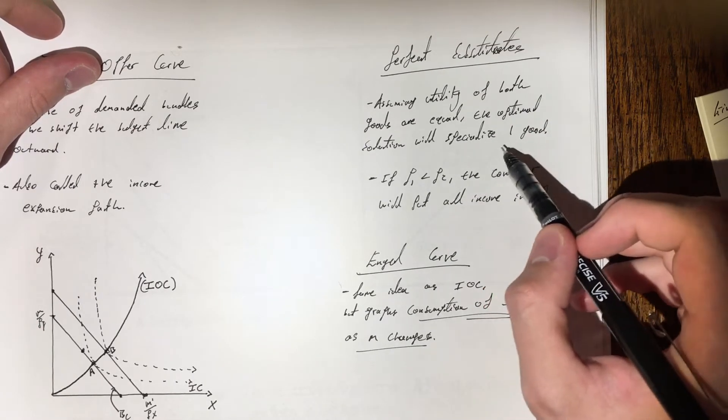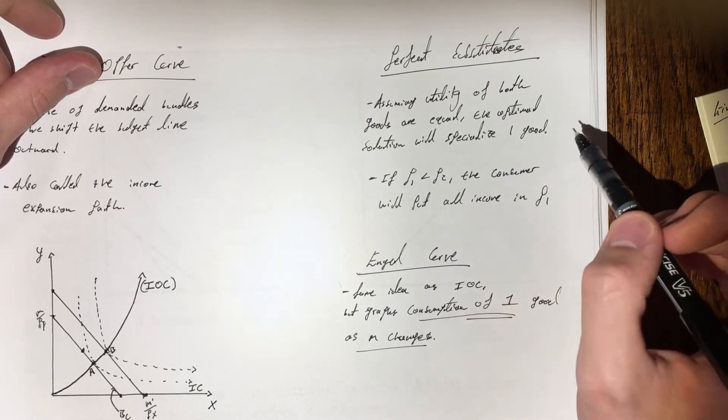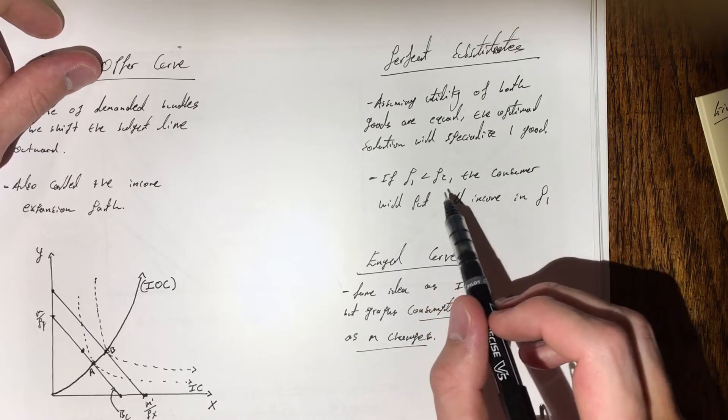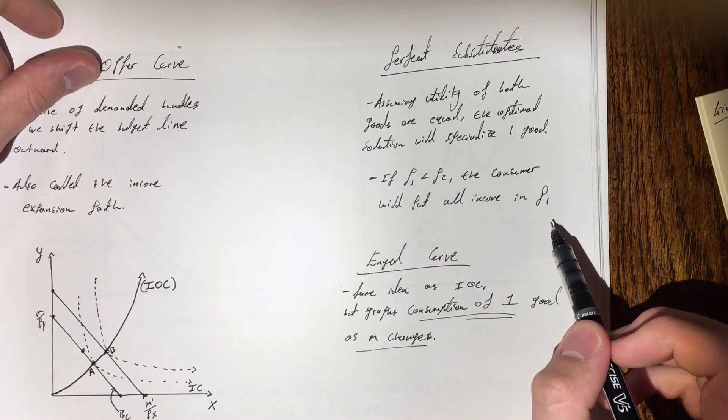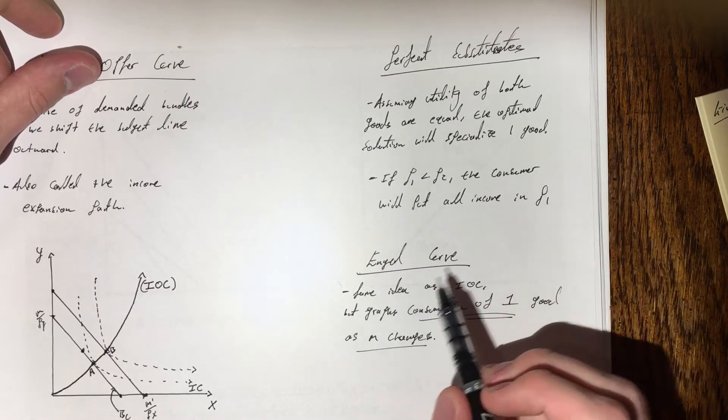In a perfect substitutes case, if the price of good one is less than the price of good two, the consumer would put all of their income in p1, or x.